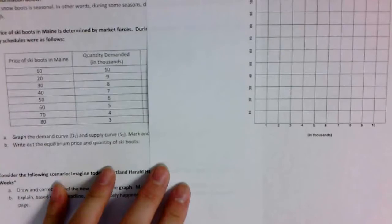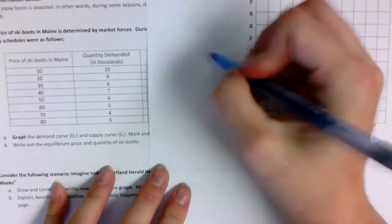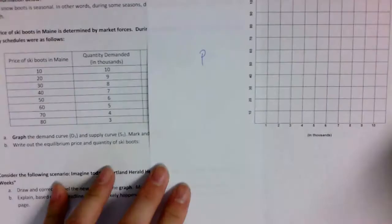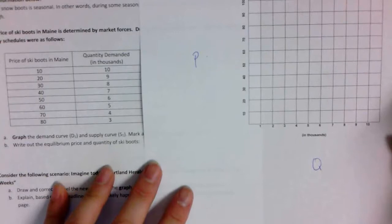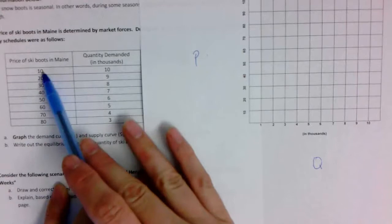Actually, in case somebody doesn't know how to read this thing, I'm going to make sure. So for example, I'll at least do some of them on camera. For example, the price of ski boots in Maine. First of all, we know this is price.